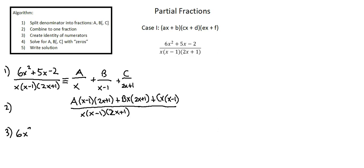6x squared plus 5x minus 2, that's the left hand side numerator. The identity relationship is with A times x minus 1 times 2x plus 1 plus B times x times 2x plus 1 plus C times x times x minus 1.